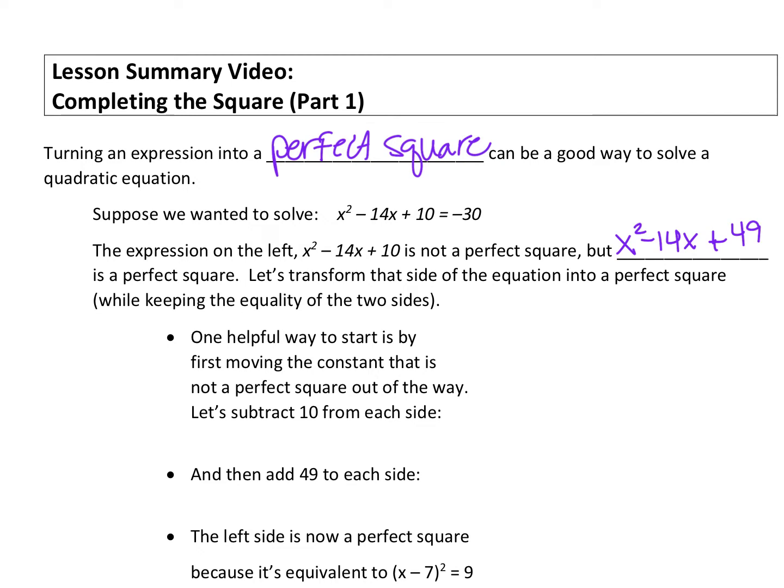Let's go ahead and rewrite our equation. We have x squared minus 14x plus 10 equals negative 30. It's helpful to start by moving the constant that's not a perfect square out of the way. So this plus 10 right here, we can subtract it from both sides of our equation. So we're going to subtract 10 from both sides. That gives us x squared minus 14x equals negative 40.